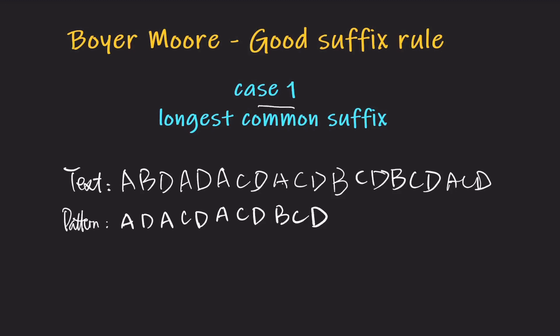Here, we compare from the rightmost position and find the matched chunk. If this matched chunk happens elsewhere in the pattern string, and the letter preceding it is different from the letter preceding the matched chunk, then there is Case 1. Here you can see we have two CDs.